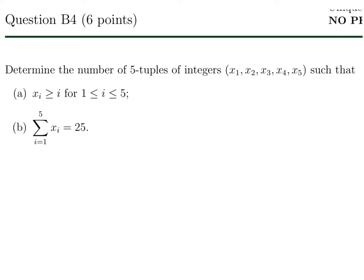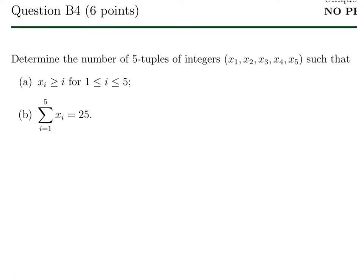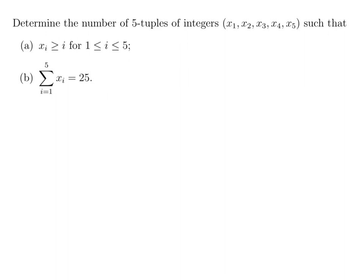Determine the number of 5-tuples of integers x1 through x5 such that xi is greater than or equal to i for i between 1 and 5 inclusive. And the sum of xi from i equals 1 to 5 is 25. I think these are two conditions for the same question. I don't think these are two separate questions. Because if this was just a question by itself, there would be infinite solutions. So, I don't know why they did that. Usually, they do, like, condition 1 and, you know, condition 2. By making A and B, it makes me think that there's two separate questions. Anyhow, here we go.